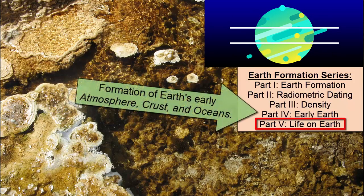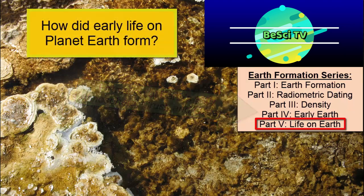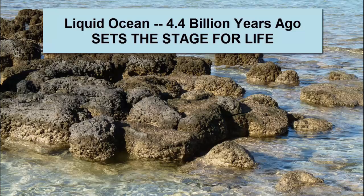After having watched the Early Earth video tutorial, we now have an understanding of how Earth's early atmosphere, crust, and oceans formed. But how about life? When did that evolve, and what was early Earth's life like? With a liquid ocean layer present on Earth's surface 4.4 billion years ago, the stage was set for the earliest life to evolve.